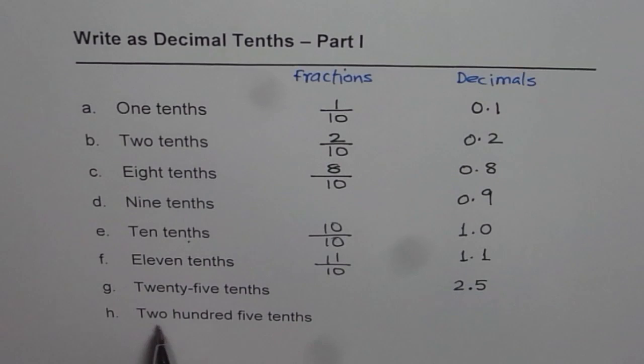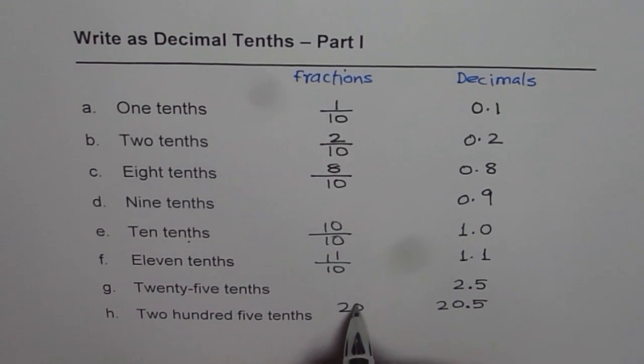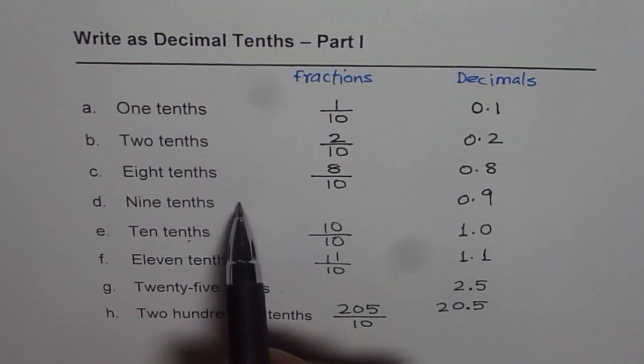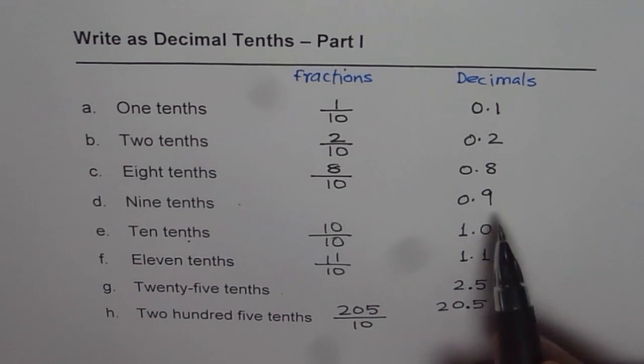Then we have two hundred five tenths. So we can say two hundred five. Since we are saying two hundred five tenths, we will put a decimal here. Now you have to check with fraction equivalent. Does it make sense to you? Two hundred five tenths. That means two hundred five divided by ten. Do you get twenty point five? Yes you do. So I left them on purpose. You can check yourself if it makes sense.